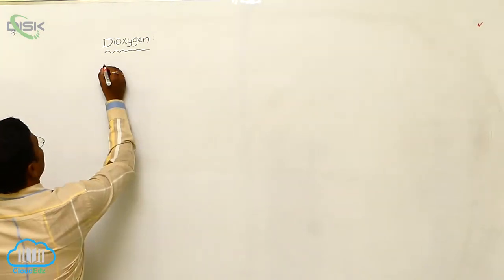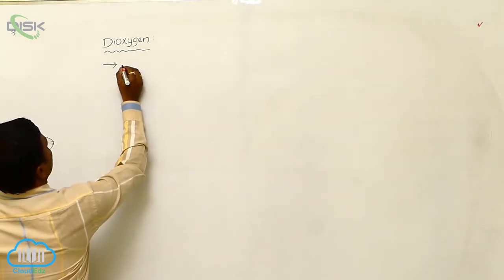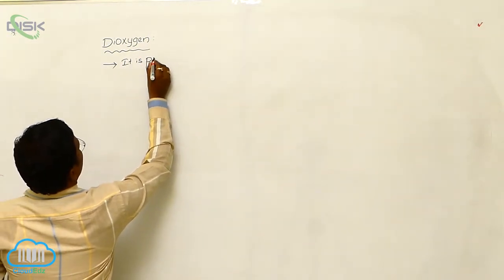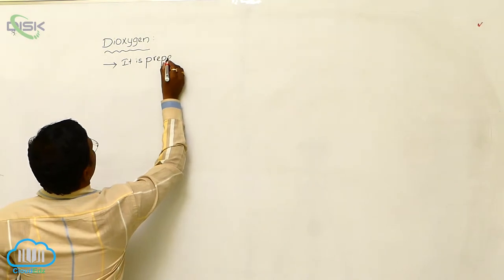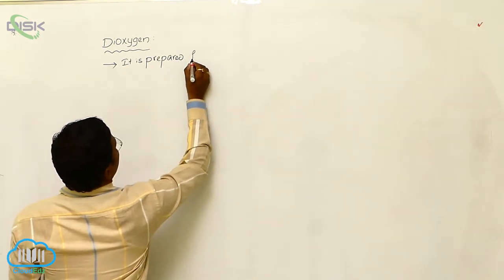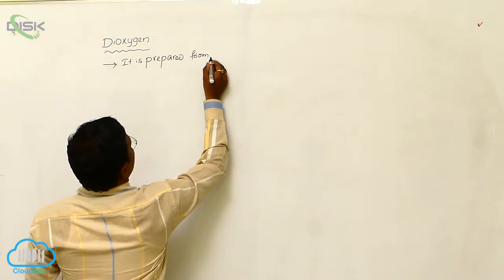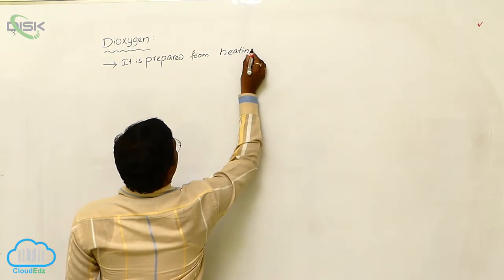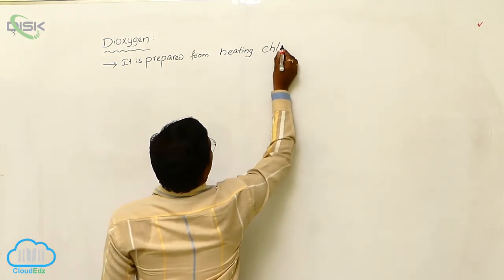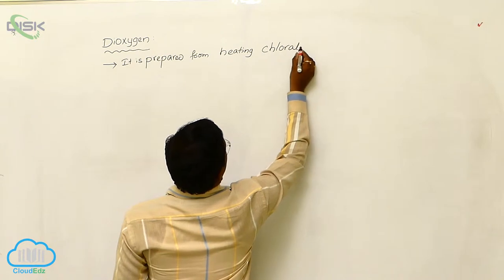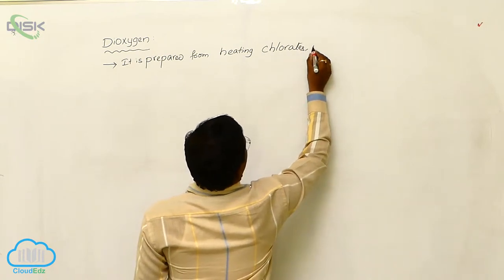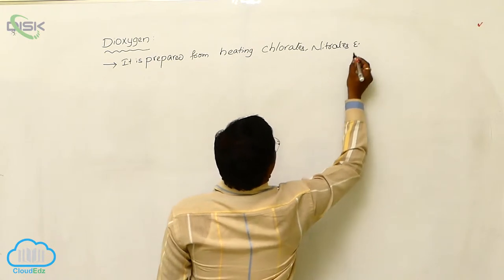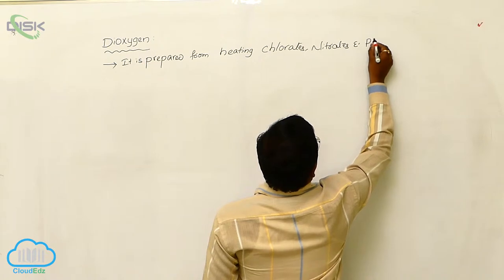Dioxygen, in the laboratory, is prepared from heating chlorates, nitrates, and permanganates.